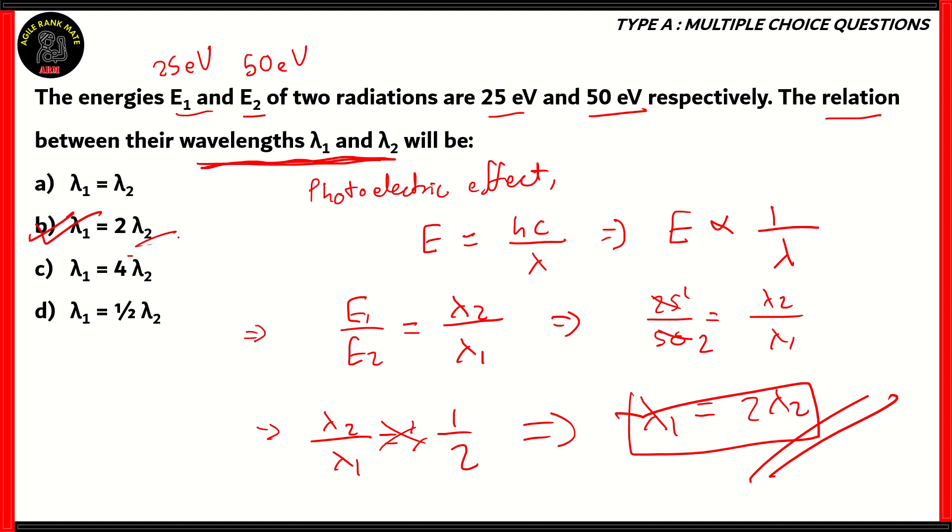So therefore the option that is correct is option B, λ1 = 2λ2. If the energies were same, then the two wavelengths would be equal. If say the energy of E1 was 25 and E2 was 100, then option C would have been correct. And if E1 was 50 and E2 was 25, then option D would have been correct. However, for this particular scenario, λ1 is equal to 2 times λ2. Again, the relation being that using the photoelectric effect, energy of radiation is inversely proportional to the wavelength.